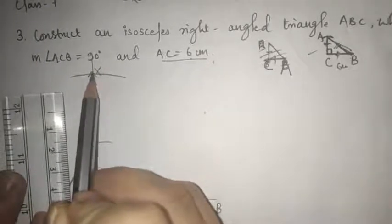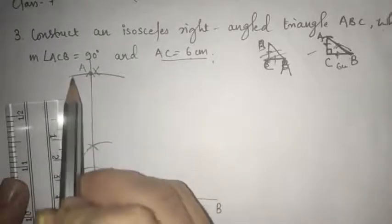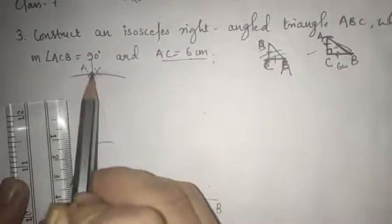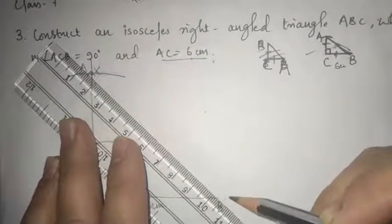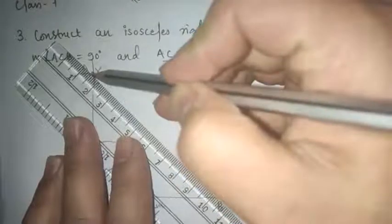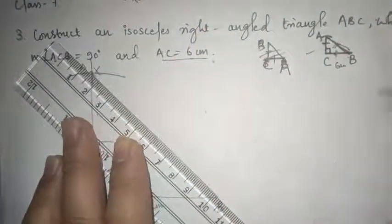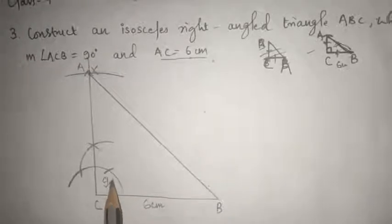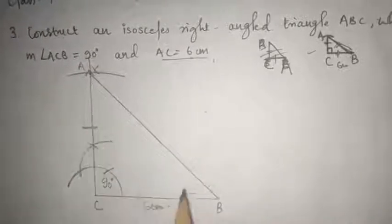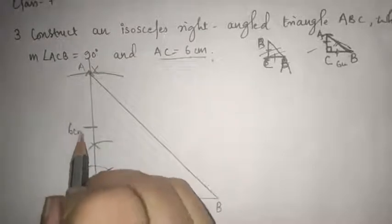This is our A, point A where this arc is getting cut. So this is our A and now join this point A and B. Alright, so this becomes our right angle triangle of 90 degree and isosceles triangle which is 6 centimeter.